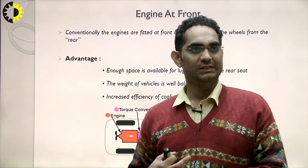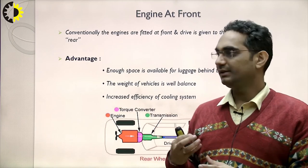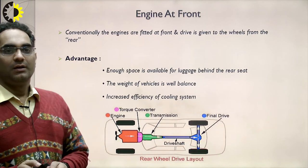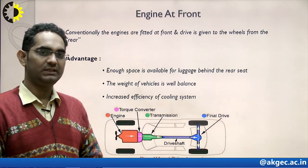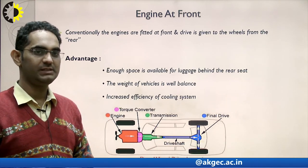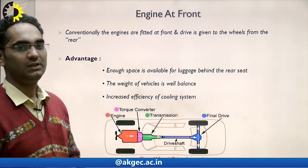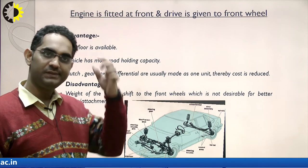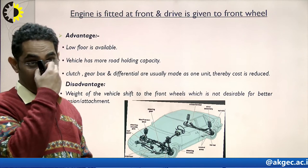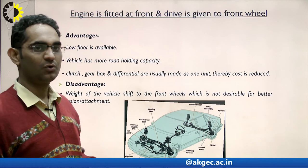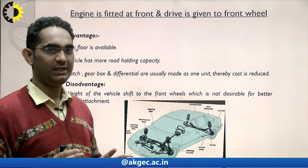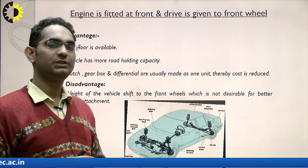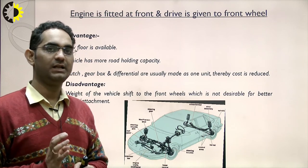Advantages of front engine with rear-wheel drive: enough space is available for luggage behind the rear seat, the weight of the vehicle is well balanced, and there is increased efficiency of the cooling system. When the engine is fitted at the front with drive given to the front wheel, advantages include a low floor, more road-holding capacity, and clutch, gearbox and differential are made as one unit, thereby reducing cost.